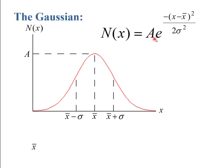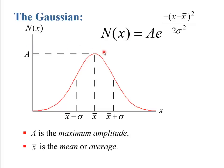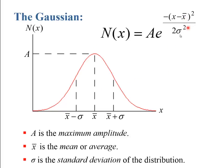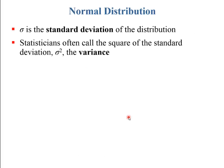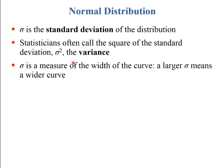Mathematically, the Gaussian is A times e to the power of negative (x minus x-bar) squared over 2 sigma squared. A here is the amplitude — just the top of the curve. x-bar is the average or mean, the center of the distribution. Sigma is the standard deviation, which describes the width. Larger sigma means the curve is wider and you have more uncertainty every time you make a measurement. Sometimes you hear about the variance, which is sigma squared.